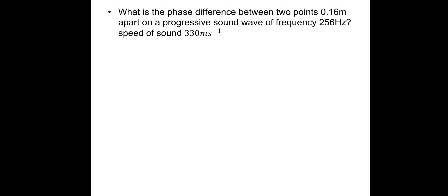What is the phase difference between two points 0.16 meters apart on a progressive sound wave of frequency 256 hertz? The speed of sound is 330 m/s. We've got the two points, 0.16 meters, frequency and speed. We need the wavelength. The wavelength is V over F. So it's 330 divided by 256. The numbers not as friendly on this one. It gives a wavelength of 1.289 meters.